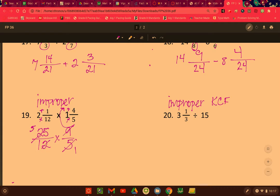And 9 and 12 have a common factor. And the greatest common factor is 3. 9 divided by 3 is 3, and 12 divided by 3 is 4. So now we can multiply straight across. And you can leave that improper. That would be fine with me.